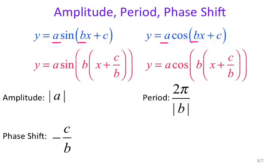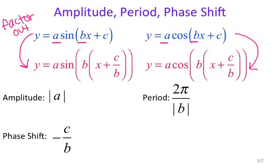To find the phase shift, you need to change your equation from the standard form to the factored form — you're just factoring out the b. Once b is factored out in front of the parentheses, that helps us find the phase shift. Your phase shift is negative c over b, because we always do the opposite of what's inside the parentheses.